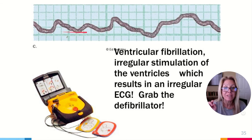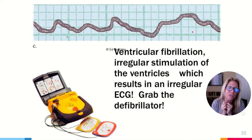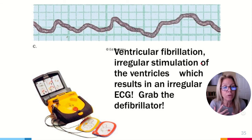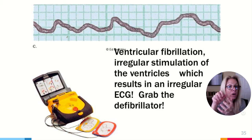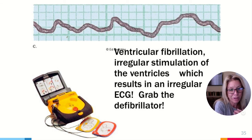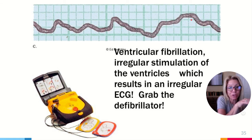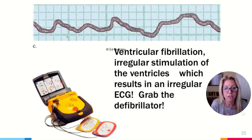If the EKG shows no regular pattern — just a chaotic line — the heart is fibrillating and they need to use a defibrillator. They put an electrical stimulus across the heart, making the whole heart contract and then relax, hoping the pacemaker will restart the heart at the right rhythm. A flat line means there is no electrical stimulus across the heart and it's no longer beating, and they can also attempt to restart it.